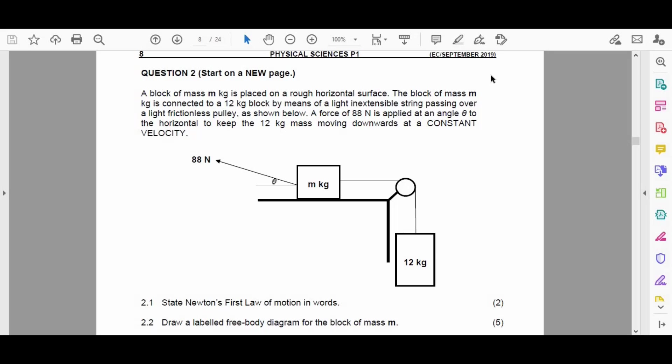Question 2 reads that a block of mass m kilograms is placed on a rough horizontal surface. The block of mass m kilograms is connected to a 12 kilogram block by means of a light inextensible string passing over a light frictionless pulley as shown below. A force of 88 newtons is applied at an angle theta to the horizontal to keep the 12 kilogram mass moving downwards at a constant velocity. First tip: prepare yourself for a definition question at the start of almost any section in section B. There shall be a definition question asking you to define a certain law that exists in physics. 2.1 of this paper asks us to state Newton's first law of motion in words.